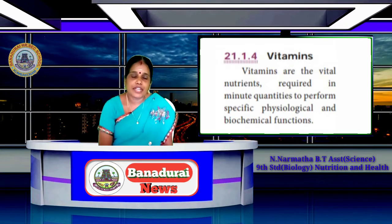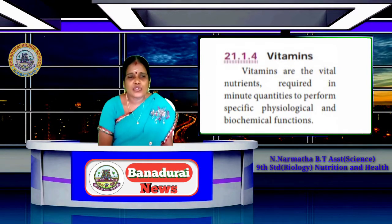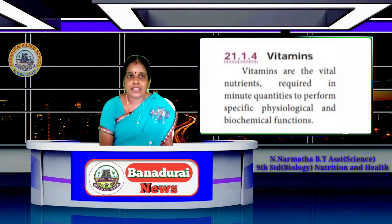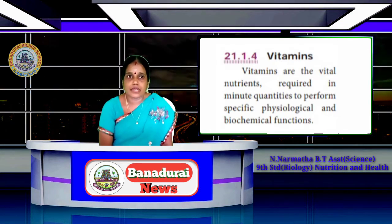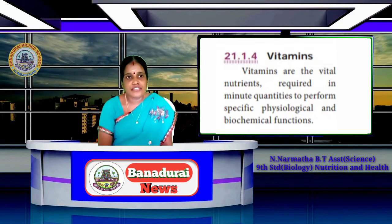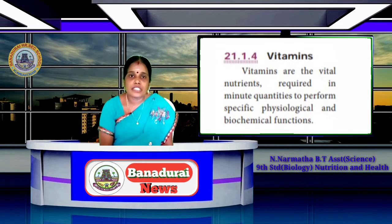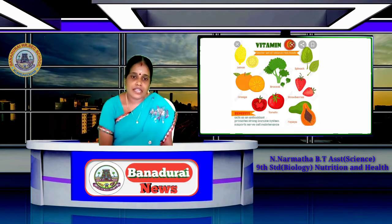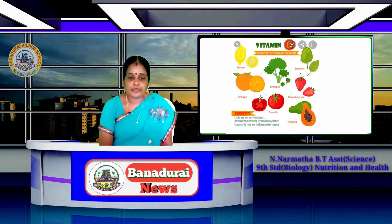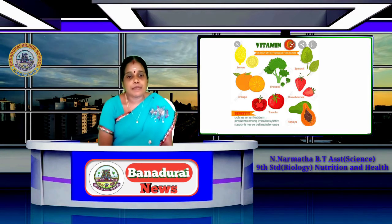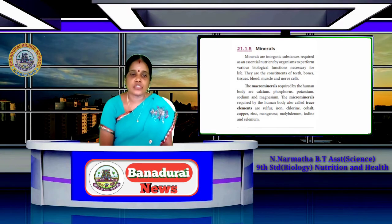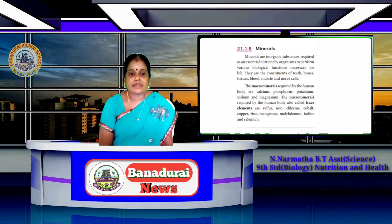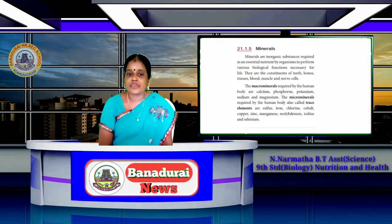Vitamin A is found in foods like carrot, papaya, and apple. Vitamins E is another type. Vitamins are organic compounds that perform various biological functions necessary for life.